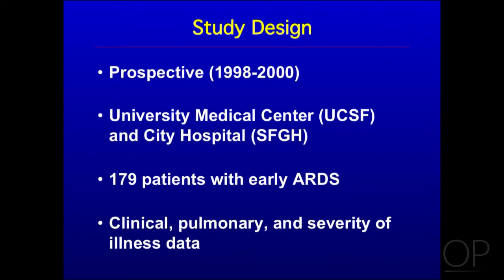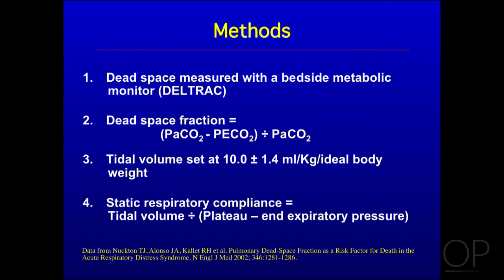179 patients were prospectively enrolled, and we collected clinical pulmonary and severity of illness data. We measured the dead space with the bedside metabolic monitor, the DELTRAC, normally used to help guide nutritional replacement. We calculated the dead space fraction with a modified Bohr equation, where in the numerator you have arterial PCO2 concentration divided by mixed expired CO2 — not to be confused with end tidal CO2 — but mixed expired CO2 divided by the arterial PCO2.